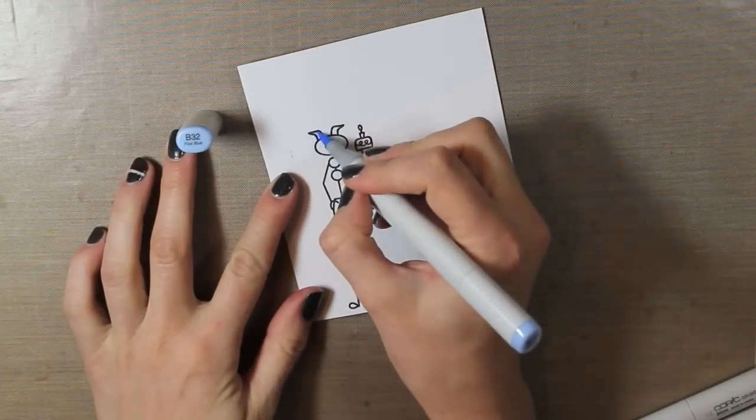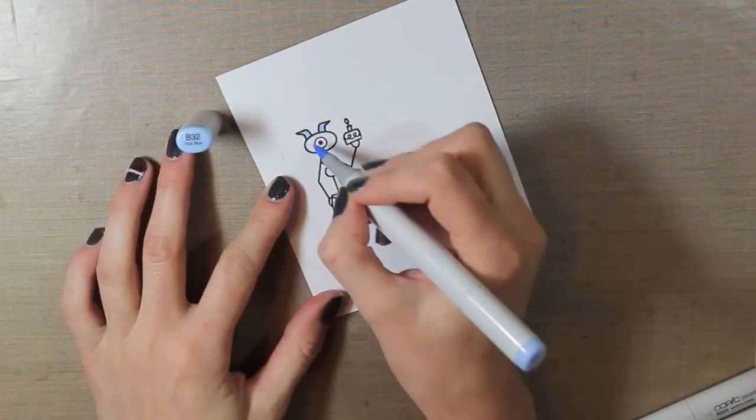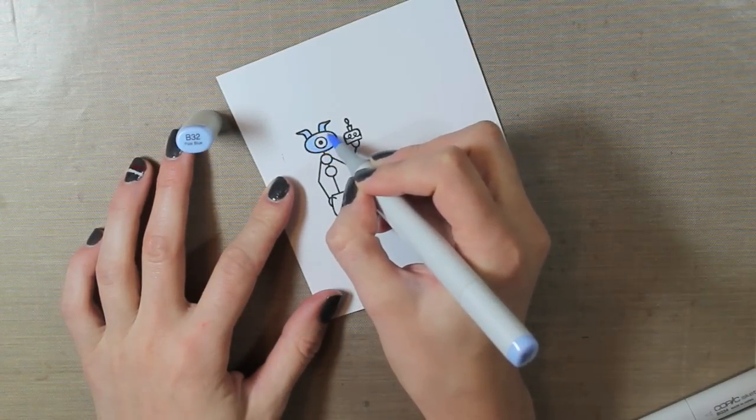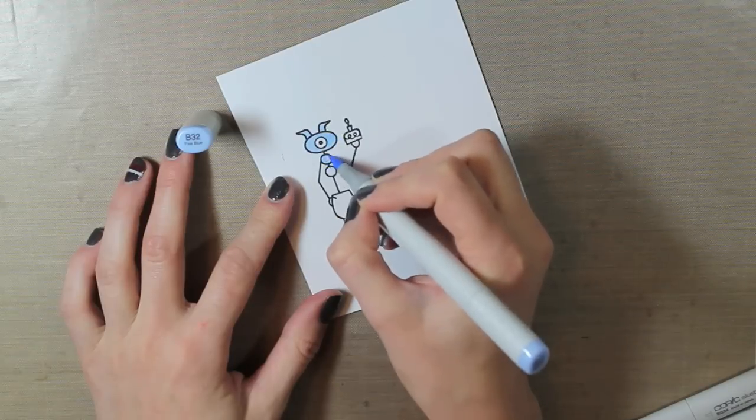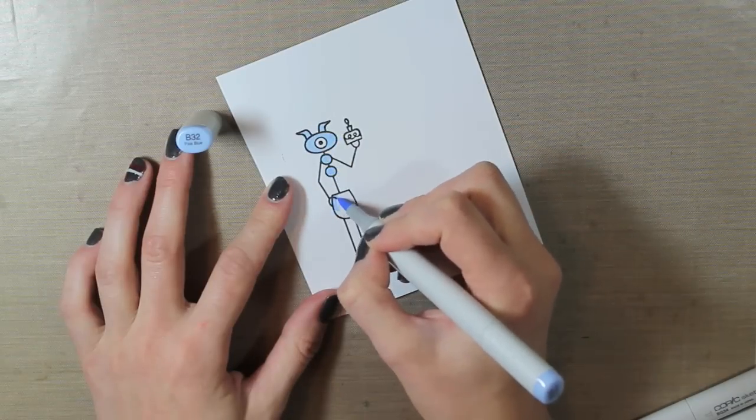Alright, so then I can go ahead and color this in with my Copic markers. I did some really simple Copic coloring. So I'm coloring in all of the parts of this monster with the B32, which is a really light blue color.